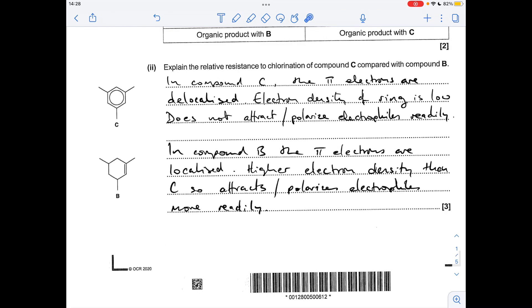Moving on to the next part, explaining the relative resistance to chlorination of compound C compared to B. In compound C we've got delocalised pi electrons, the electron density of the ring is low, so it doesn't attract or polarise electrophiles easily. Whereas in B, the pi electrons are localised, they're just shared between those two carbon atoms, so there's a higher electron density of the pi electrons, therefore it will attract or polarise electrophiles more readily.